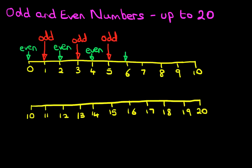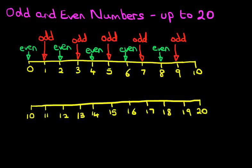Do you recognize the pattern? We have even, odd, even, odd, even, odd — and this is the sequence that runs through all the numbers. If one of the numbers is even, the next one is always an odd number. So number 8 is even, 9 is odd, and the last one here on the top number line, 10, is even. We've completed the top line and it runs even, odd, even, odd, even, odd.